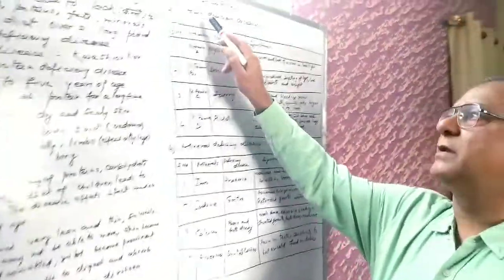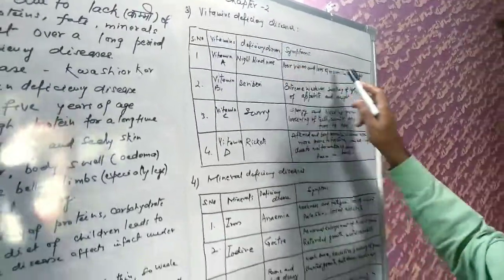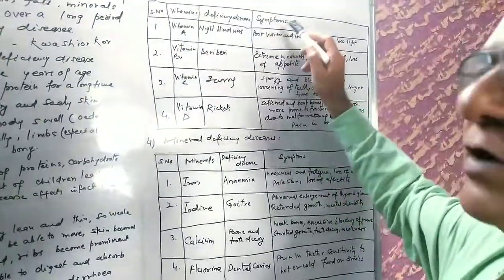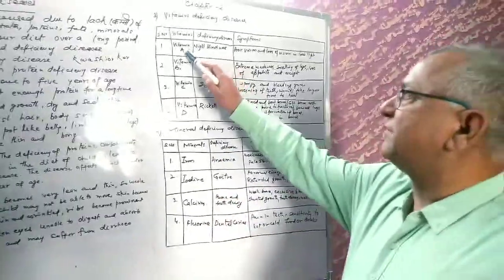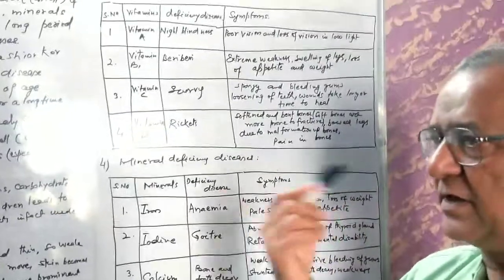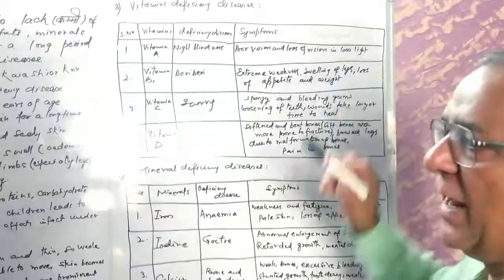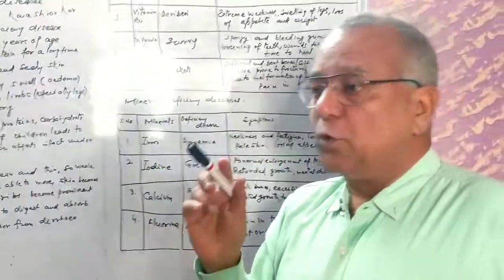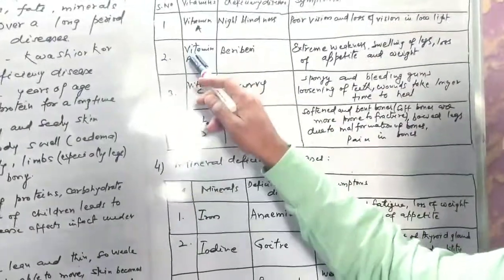Next category is vitamin deficiency diseases. I have given you this in the form of a table. Number one is Vitamin A. Deficiency causes night blindness. What is night blindness? Poor vision and loss of vision in low light. In evening and morning when there is very low light, you have difficulty seeing.